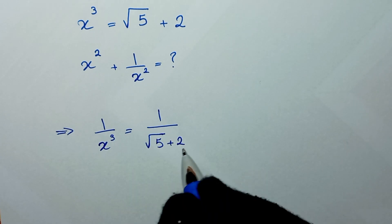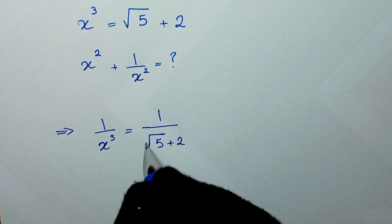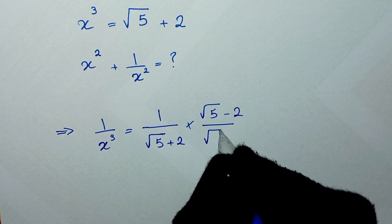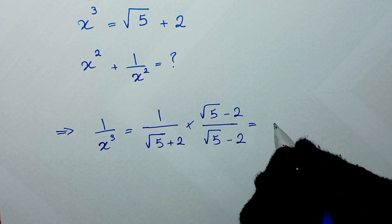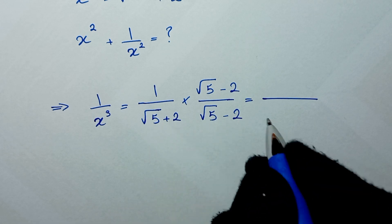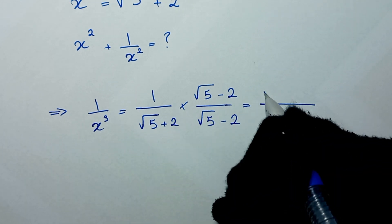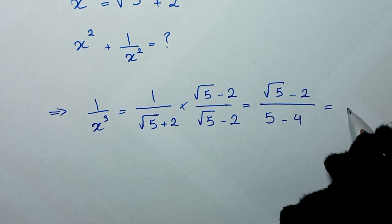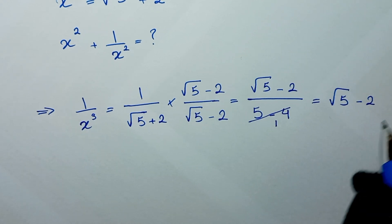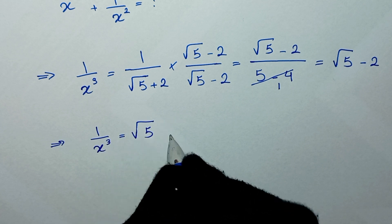We rationalize this fraction by multiplying the numerator and denominator by the conjugate of the denominator: square root of 5 minus 2. This gives us the form (a + b)(a − b) = a² − b². So square root of 5 squared is 5, minus 2 squared is 4, giving 5 − 4 = 1. Therefore 1 over x cubed equals square root of 5 minus 2.